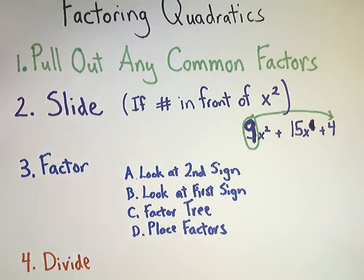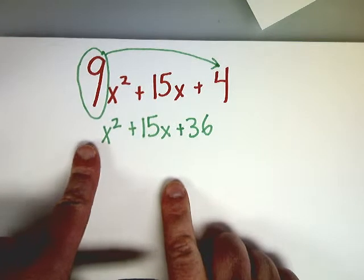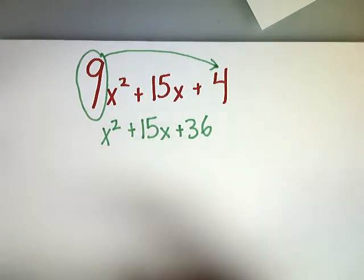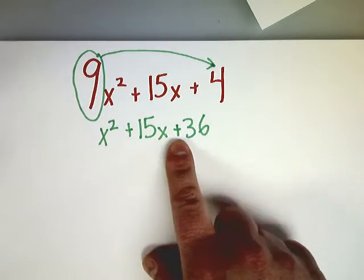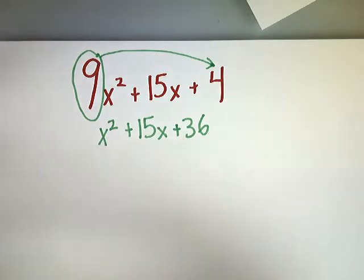And there's a little process to do that. So the first thing I'm going to do is look at the second sign in the quadratic. Here's the second sign, the one that's visible. Obviously, there's one here that you don't see, but I'm talking about visible signs. This is the second sign. This will tell me, specifically, in my answer, whether the signs in the answer are going to be the same or different.